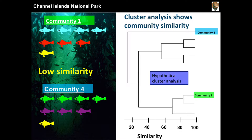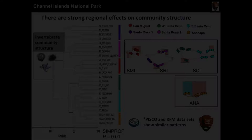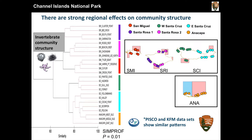So you do that, you take the data and you do the analysis, and sure enough you get the pattern you'd expect to see — where Anacapa is more closely related to East Santa Cruz and so on through the chain for invertebrates.